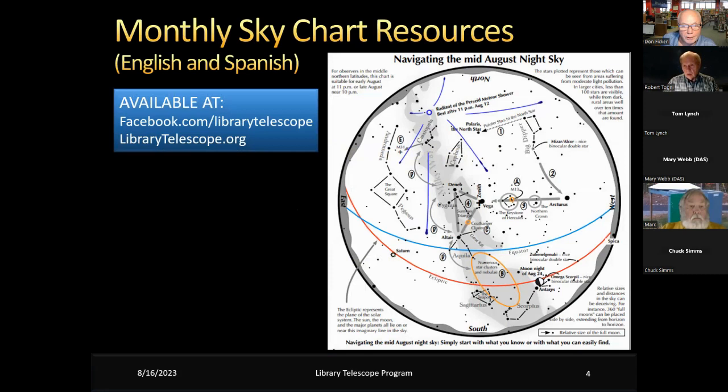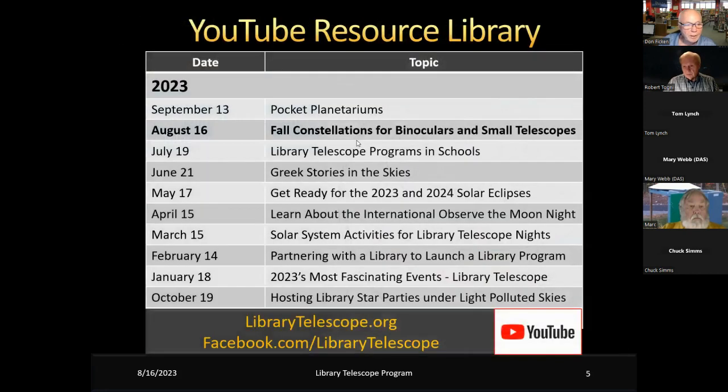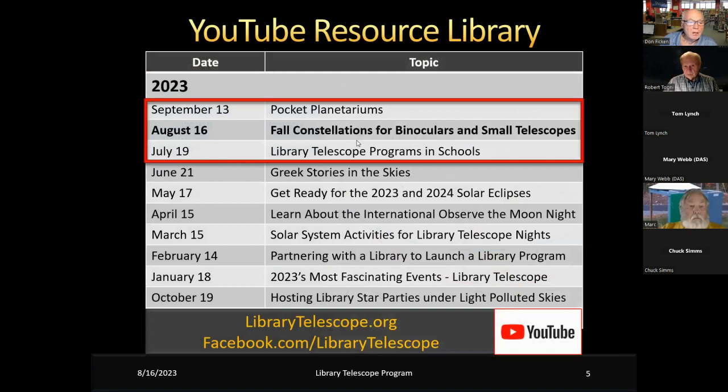He does lots of cool cartoons and astronomy-related facts. We've also got a very robust website. It's got a world map that lists what we think are all the participating libraries. One of the things that are available on the front page of our website is a series of sky maps, both in English and Spanish. This is courtesy of the Astronomical League.